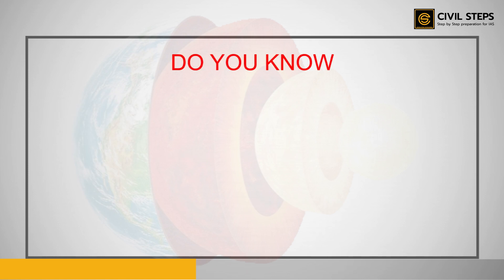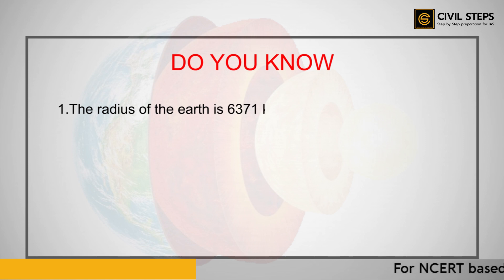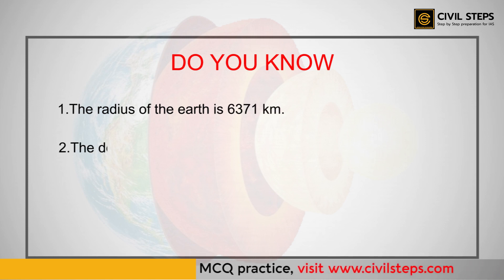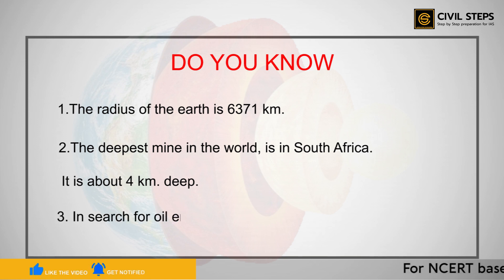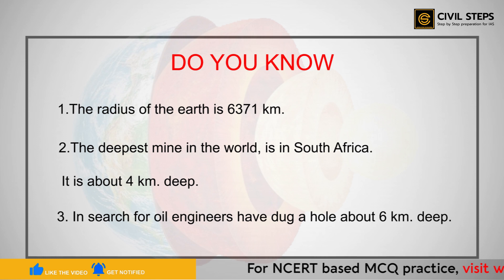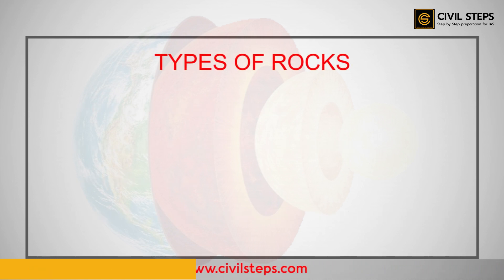Some basic facts about the Earth: the radius of the Earth is 6,371 kilometers. The deepest mine in the world is in South Africa, which is about four kilometers deep. In the search for oil, engineers have dug a hole about six kilometers deep.